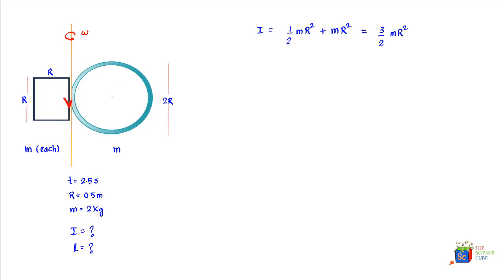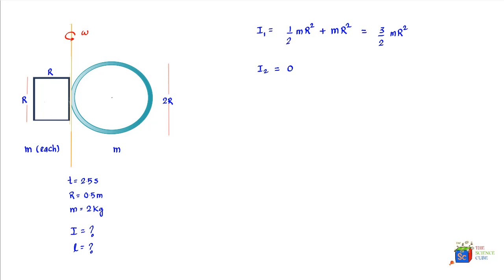For the bar aligned along the axis of rotation, the problem states it lies on the rotation axis and is very thin. Therefore its entire mass is distributed on the axis of rotation, so its moment of inertia I₂ = 0.